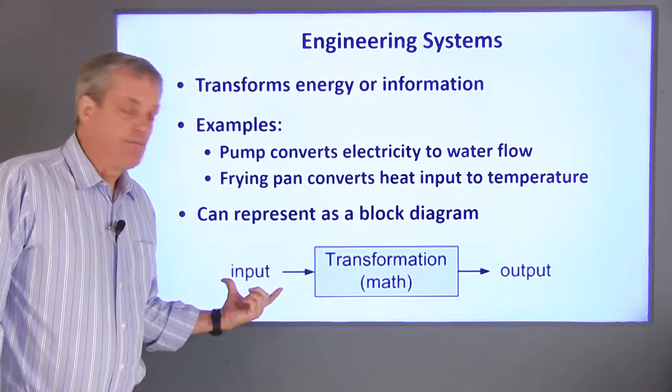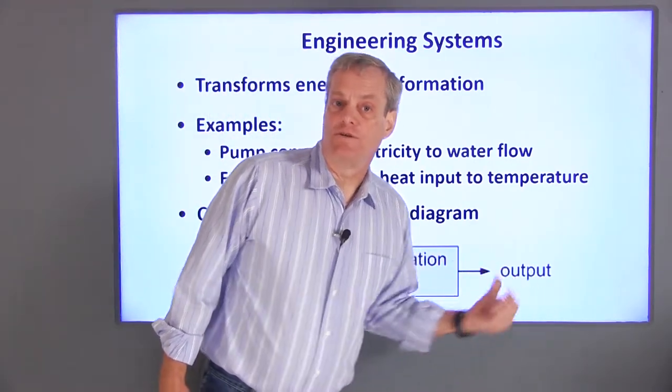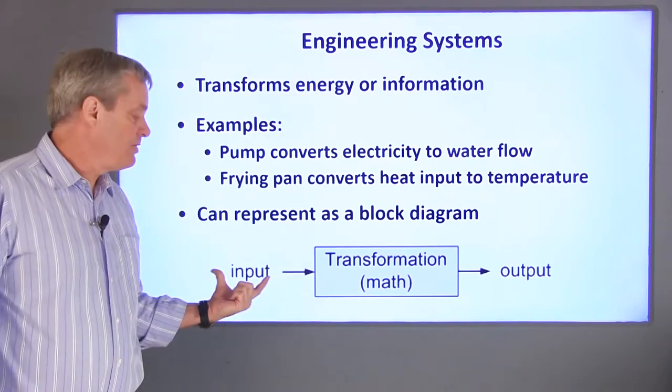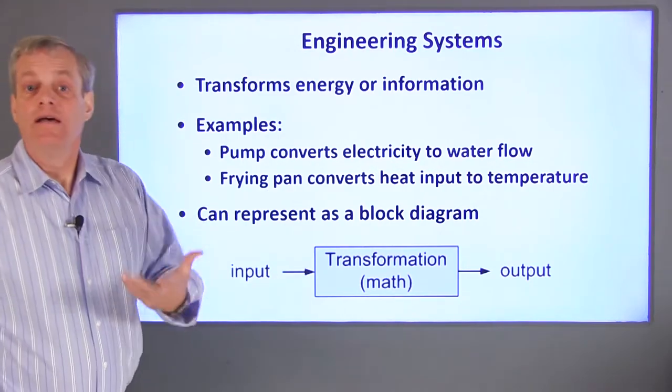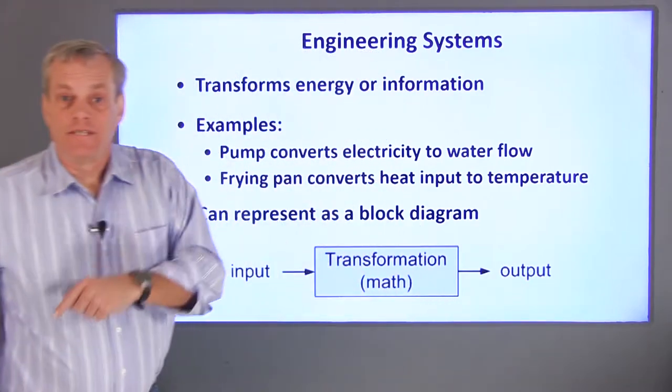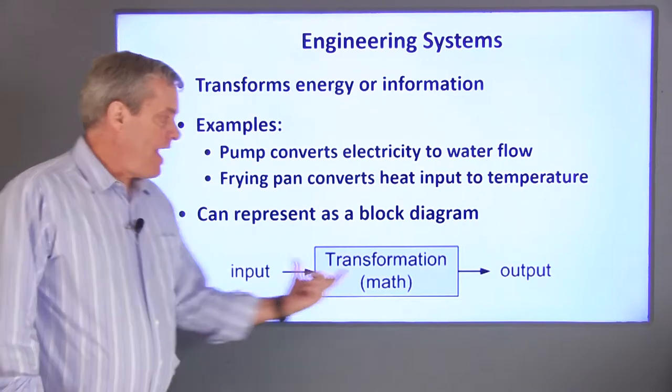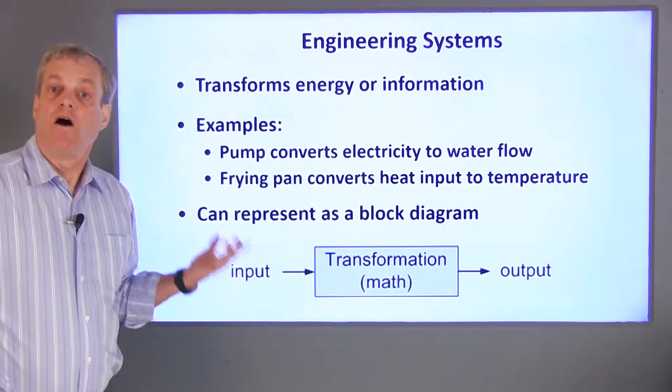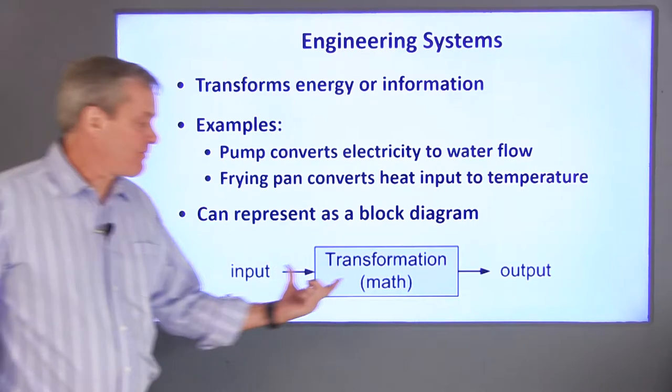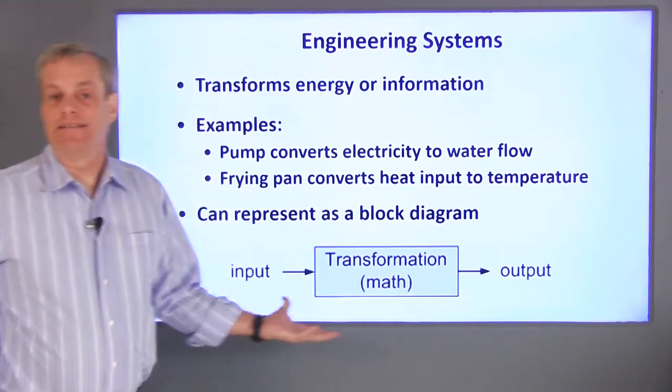The input is something that comes from outside the system, and the output is what the system converts this to. In our pump example, the input may be the voltage applied to the pump, and the output is the rate of flow the pump creates. The system is described by a mathematical relationship that gives the output as a function of the input. Our job is to decide what math relates the input to the output and use that information to design the system.